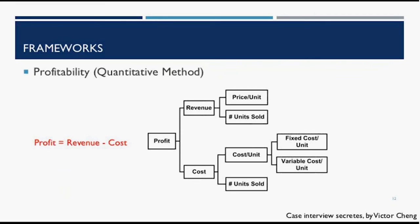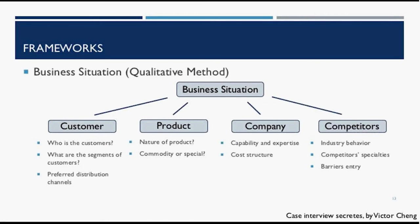We're going to introduce two kinds of frameworks. The first is the profitability framework, based on the equation: profit equals revenue minus cost. You have two branches and can go deeper under each — this helps you quantitatively understand the business situation. The second is the business situation framework, which helps you understand the business qualitatively. It has four segments: customer, product, company, and competitors, each with typical questions you'd ask. You'll have a full list on the handout.